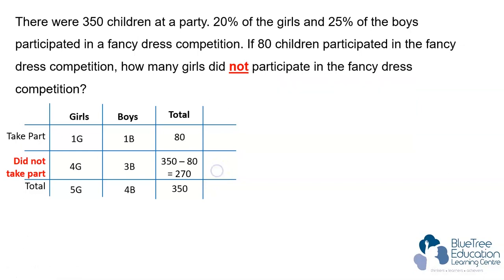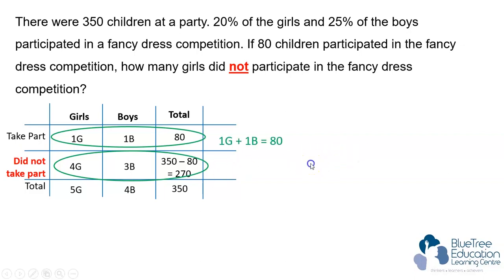After this is done, we will need to find the connection — the relationship between the girls and boys and the numbers given. The first equation: 1G plus 1B equals 80. Second equation: 4G plus 3B equals 270.